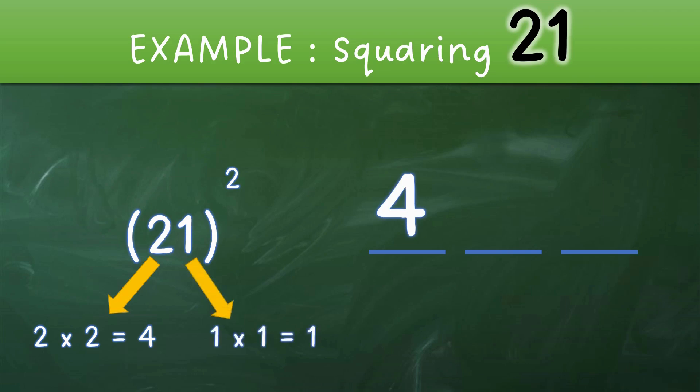Step 2 is take the square of the right side. In this example that's 1, so square of 1 is simple, 1 x 1 giving you 1. So we will put the 1 in the right side blank. Now we are left with the middle number.